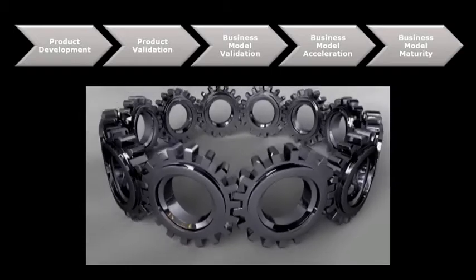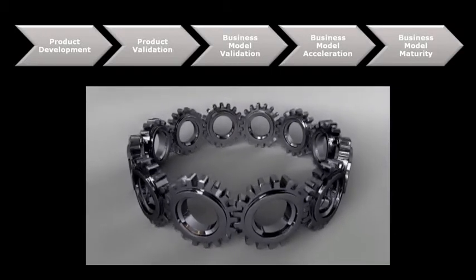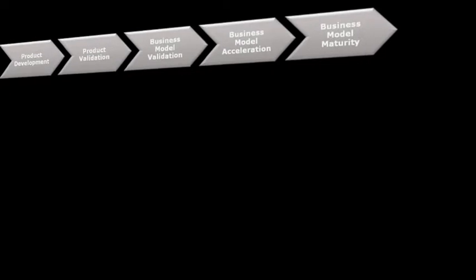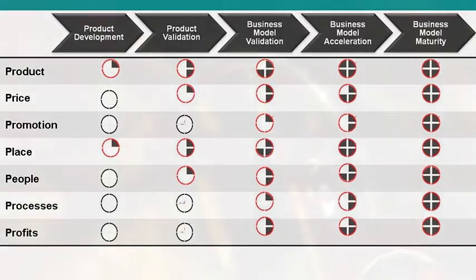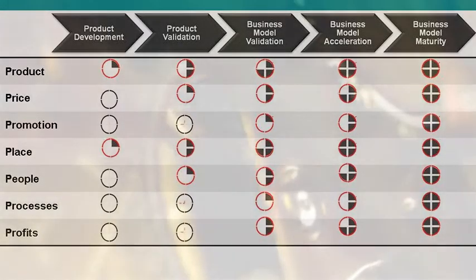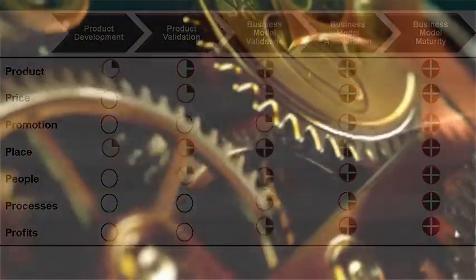At each stage, milestones are established based on a focus on the Incubation Factory's seven components of product commercialization: product, pricing, promotion, place, people, processes, and profits. This process has resulted in a truly unique and risk-mitigated approach to the launch and commercialization of new companies.